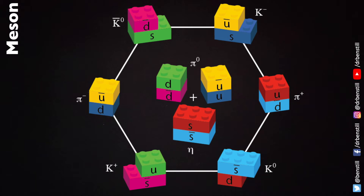But we can also add into the mix the next heaviest version of the down quark — the strange quark — and we end up with a whole range of other different mesons possible.